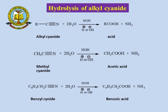The second method for preparation of carboxylic acid is hydrolysis of alkyl cyanides (nitriles). RCN, alkyl cyanide, upon hydrolysis in acidic or basic medium gives the carboxylic acid and ammonia as a byproduct. Taking methyl as R gives methyl cyanide; methyl cyanide upon hydrolysis in acidic or basic medium gives acetic acid. Similarly, hydrolysis of benzyl cyanide gives benzoic acid.